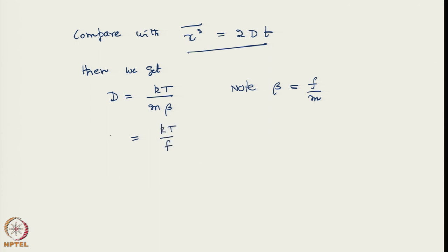We now compare this expression with the definitional expression ⟨x²⟩ = 2Dt. Then we get D = kT/(mβ). Note that β was by definition f/m, hence mβ = f, so we get kT/f. This is the desired result. We have proved what we set out to do.